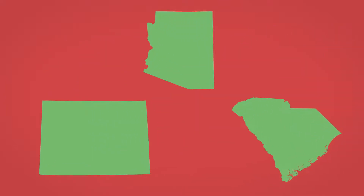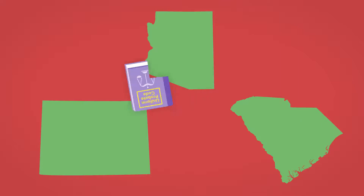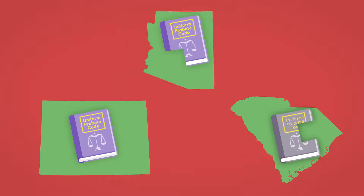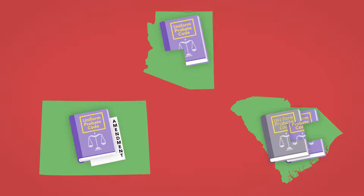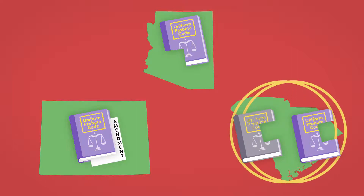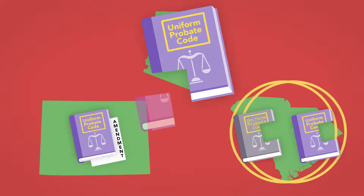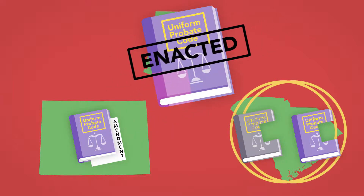Twenty states, including Arizona, Colorado, and South Carolina, have enacted some part or all of the original Uniform Probate Code, one of its more recent amendments, or a substantially similar law. Often, states adopting the code have made changes to the code's suggested provisions before enactment. As a result, even supposedly uniform laws are not completely uniform.